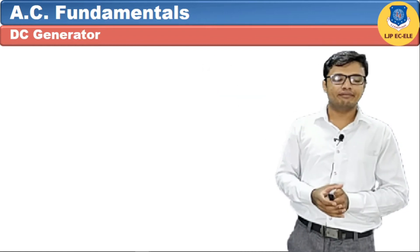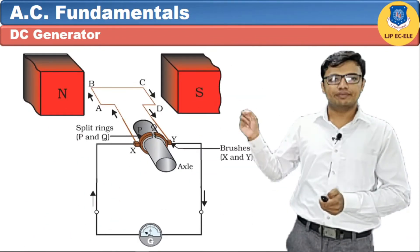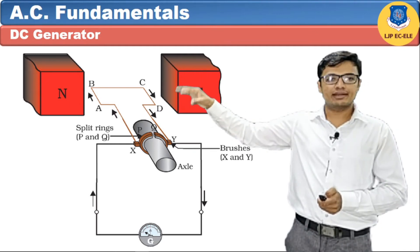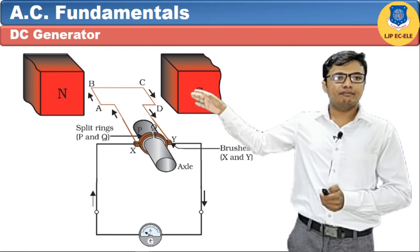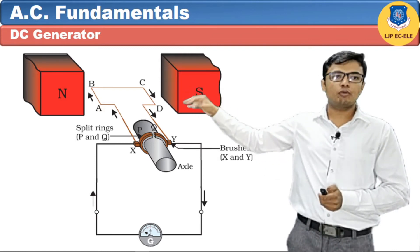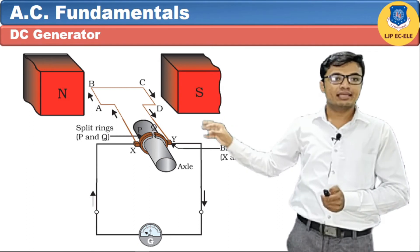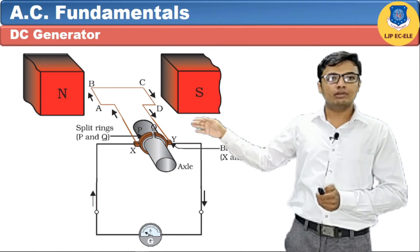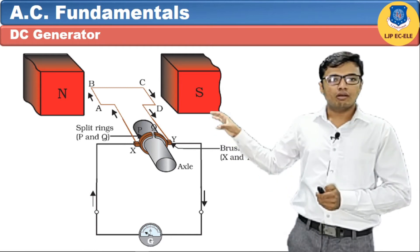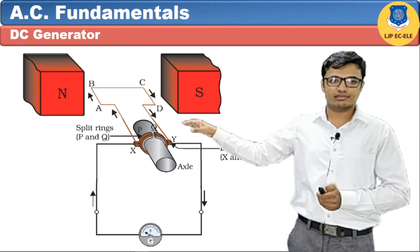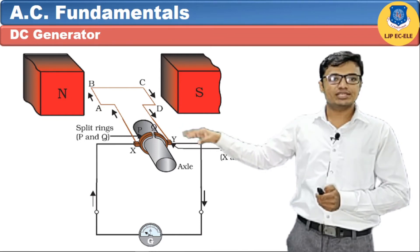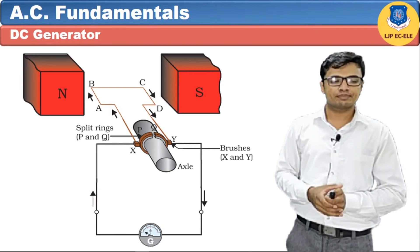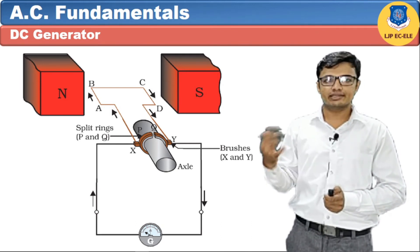Let's understand how a DC generator works. Here is a figure showing two magnetic poles — N pole and S pole — which are used to generate the magnetic flux. Inside there is one conducting loop made of copper, connected with the commutator segment. This commutator, made of copper segments, is mounted on the shaft of the armature. On the shaft we also connect two brushes, X and Y, which are used to collect the current from the commutator. A galvanometer is used to detect the value of induced EMF.